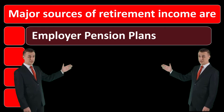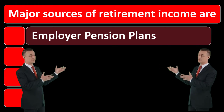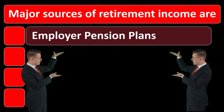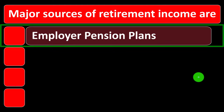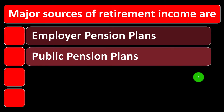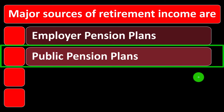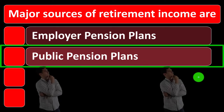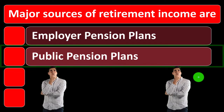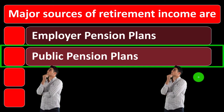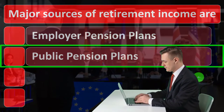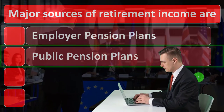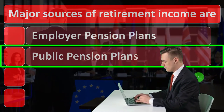In prior sections we talked about investment goals, strategies, and tools. Now we're honing in on the specific goal of retirement planning, recapping the major sources of income available in retirement: employer pension plans, 401(k) plans, public pension plans, 403(b) plans, and government benefit programs such as Social Security.